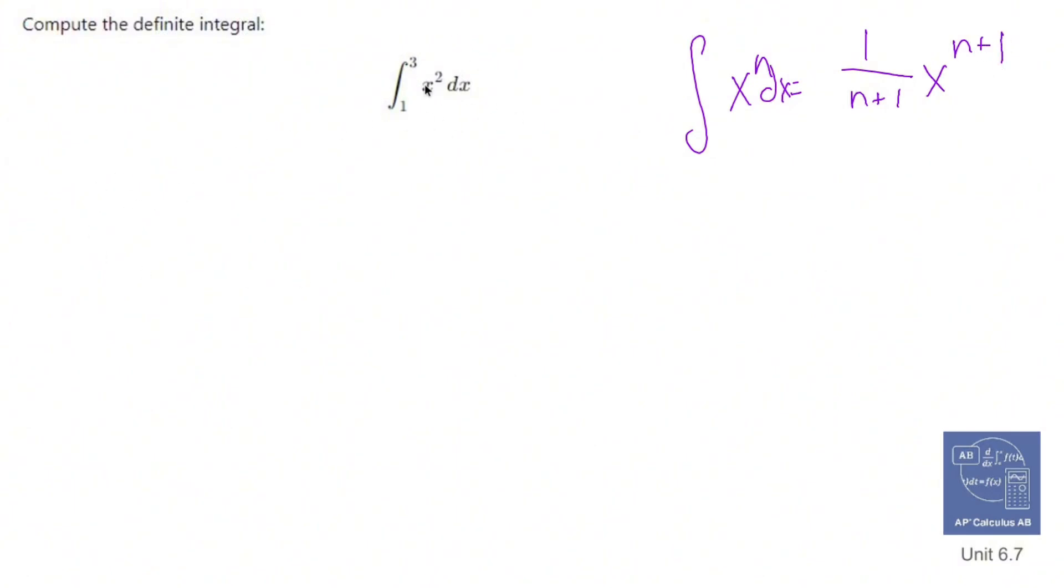So the first thing that I have to do here is use this power rule to integrate x squared. All right, so if I were to really show my steps, my n is 2. I'm going to do 1 over 2 plus 1 x to the 2 plus 1.